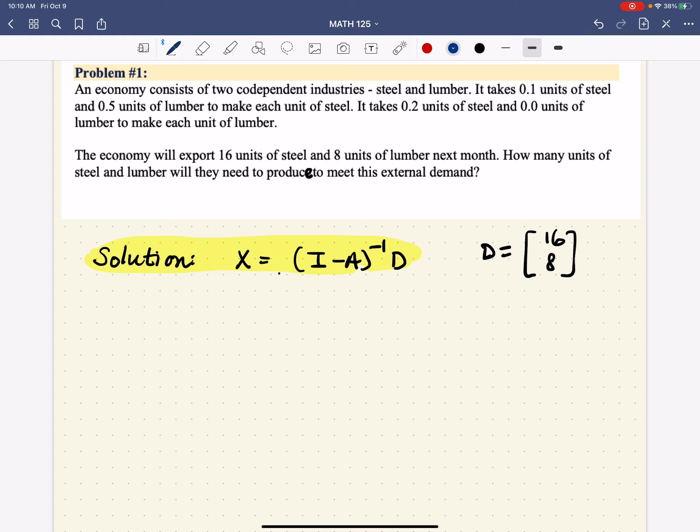So what we want to do is figure out, to meet this external demand of 16 units of steel and 8 units of lumber, how much do we need to input into the system? And naturally, that number is going to be more than 16 and 8, because you want 16 and 8 to come out.